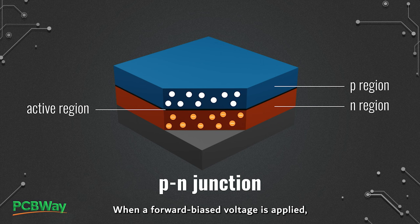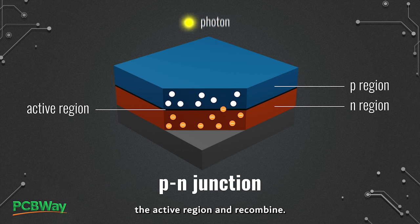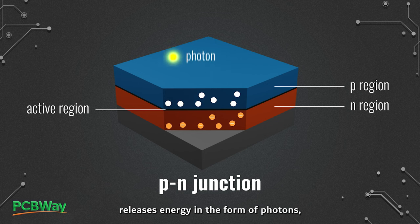When a forward-biased voltage is applied, electrons from the N region and holes from the P region move into the active region and recombine. This recombination of charge carriers releases energy in the form of photons.